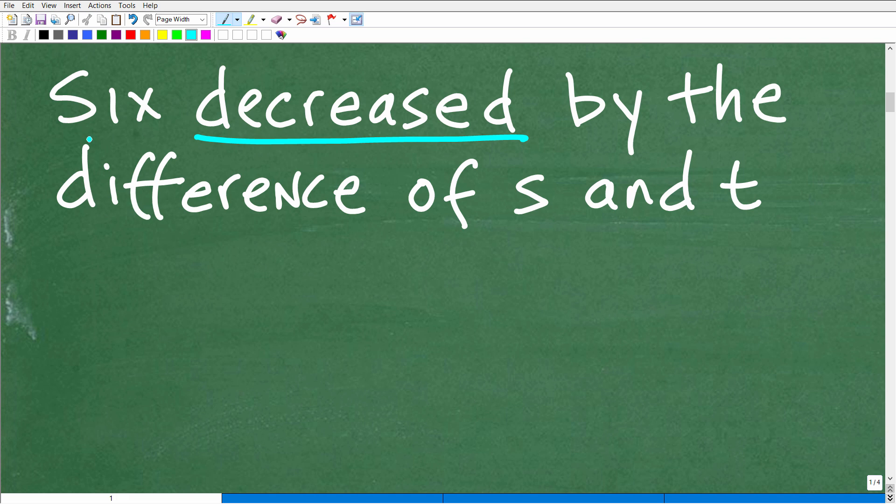We all know what six is. That's a number, but we have to understand what decreased is and we have to understand what the difference is. So the best way to do this is just kind of use some simple examples that involve these two words first, and then we'll kind of combine everything that's going on here.